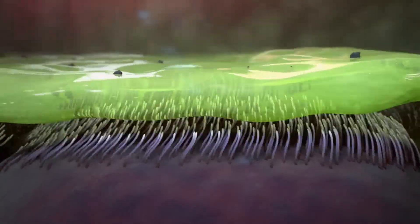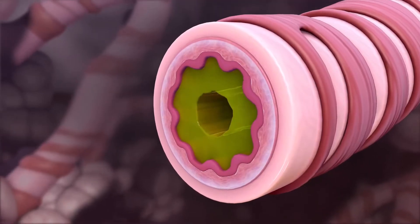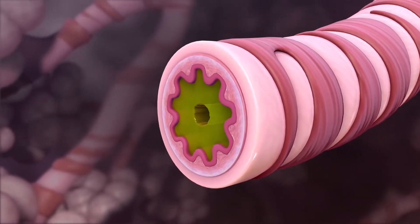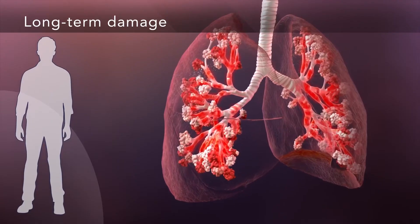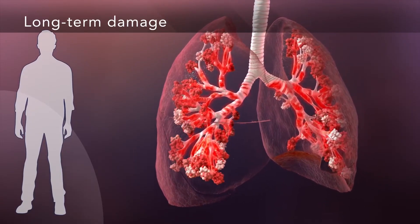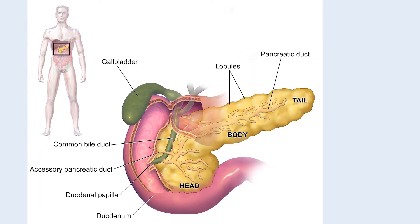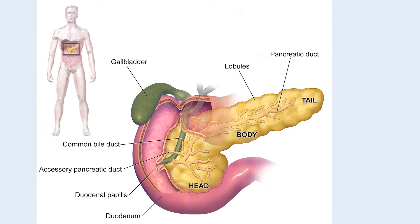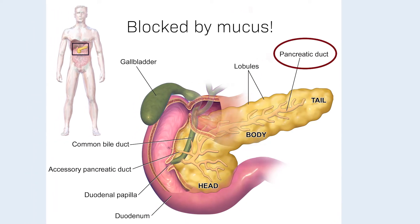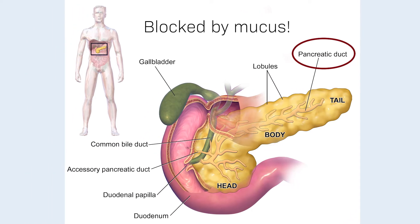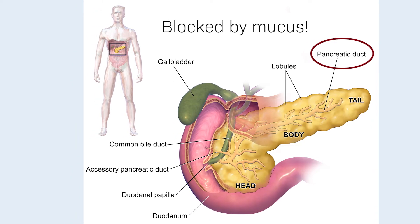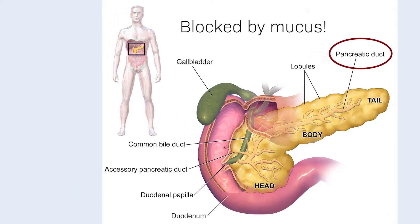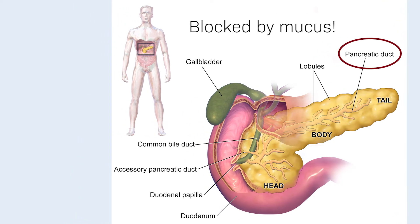The biggest impact of this disease is seen in the lungs, where the excessive mucus clogs the airways and traps germs, which can lead to chronic bacterial infections, inflammation, and respiratory failure. In the case of the pancreas, the buildup of mucus prevents the adequate release of digestive enzymes that participate in the breakdown of food and key nutrients so they can be absorbed by the body.